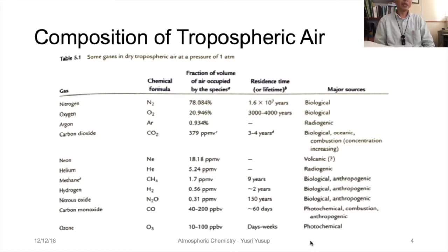Then there's neon gas at 10 times lower magnitude than carbon dioxide at 18.18 ppm, and the source is volcanic. Then helium, followed by methane, hydrogen, nitrous oxide, carbon monoxide, and ozone. Notice that the concentration of these gases vary widely in magnitude.